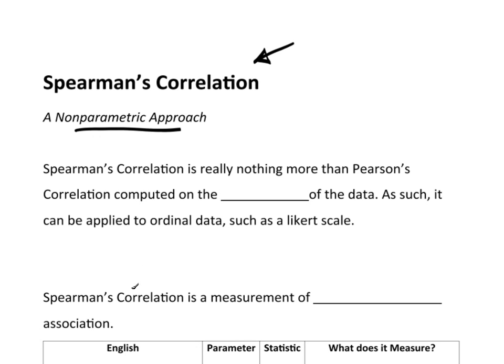Spearman's correlation is really nothing more than Pearson's correlation, but rather than computing Pearson's correlations based on the actual raw data, it's based on the ranks of the data.